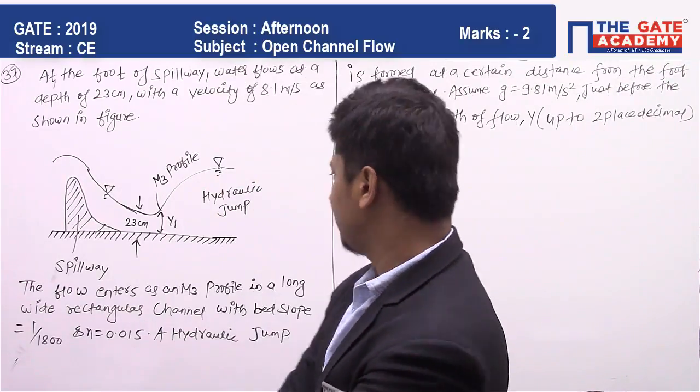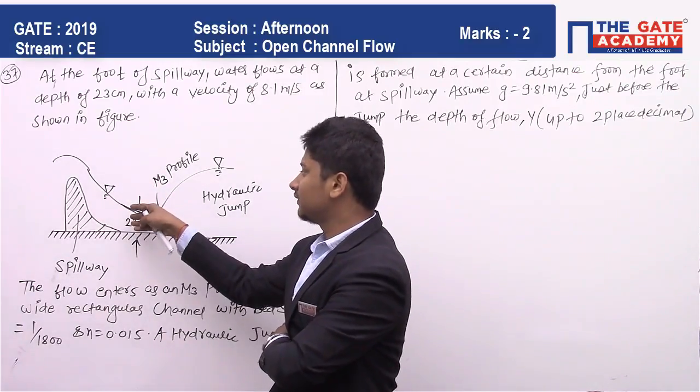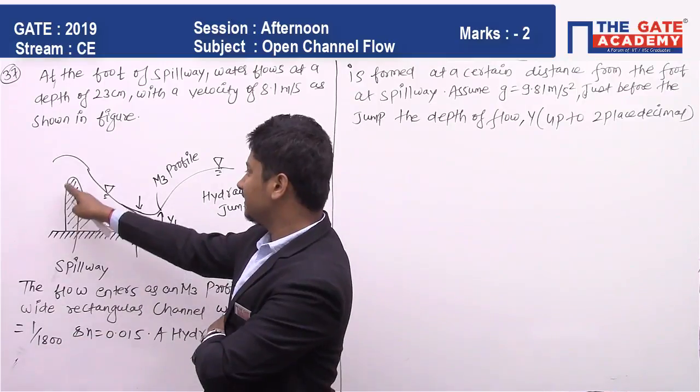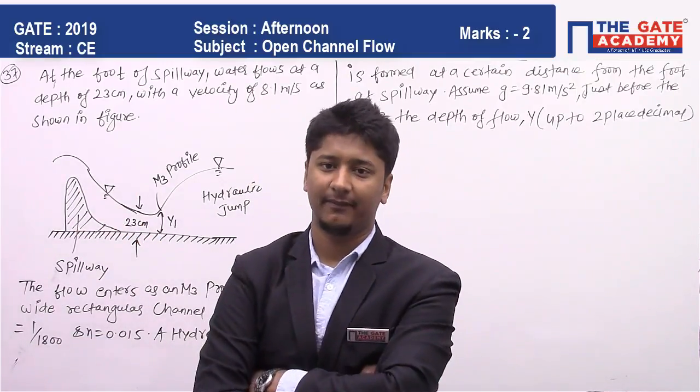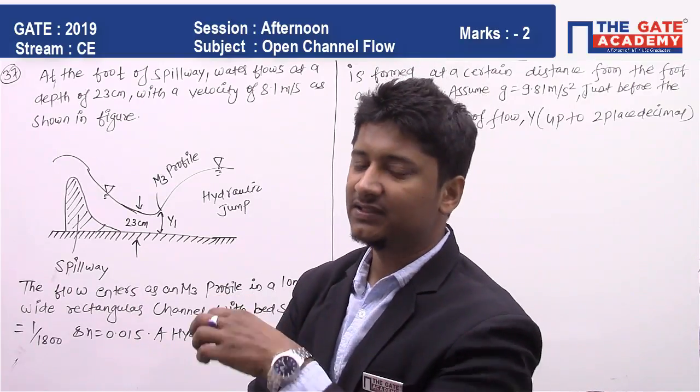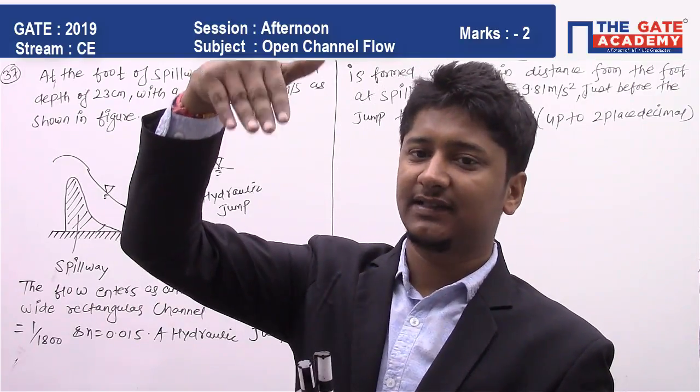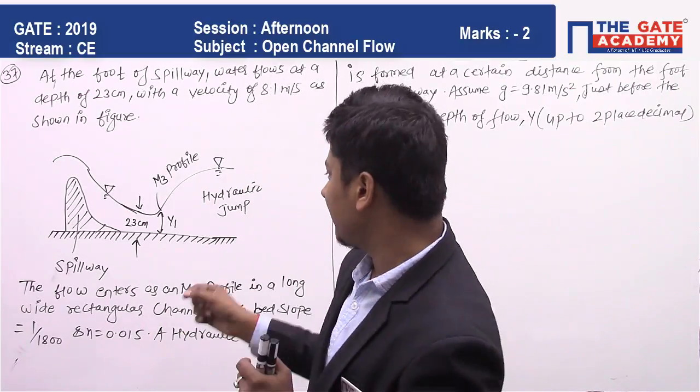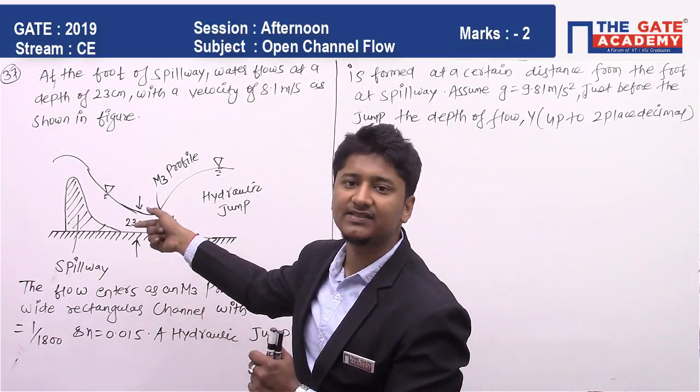The question asks: just before the jump, the depth of flow is what? Water is coming from the reservoir and at the foot of the spillway, the depth is 23 centimeters. If water is coming down through the spillway, it will create a hydraulic jump.